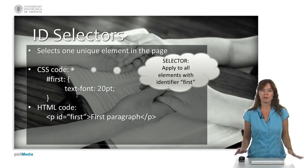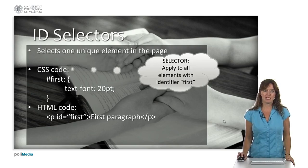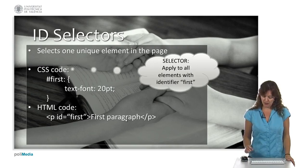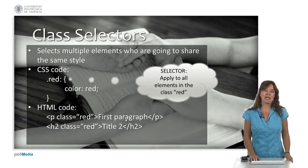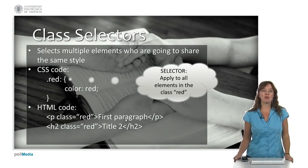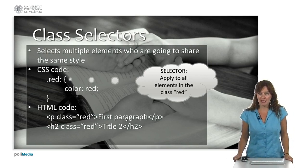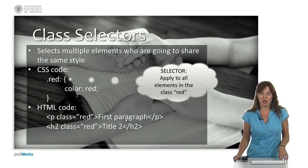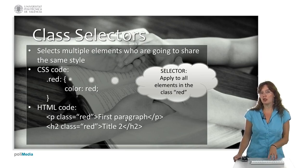So the text 'first paragraph' will be 20pt. We have another way of writing selectors, and that is based on classes. Here we see an example of CSS code that says '.red', meaning the selector applies to all elements with the class 'red', and they should be color red.